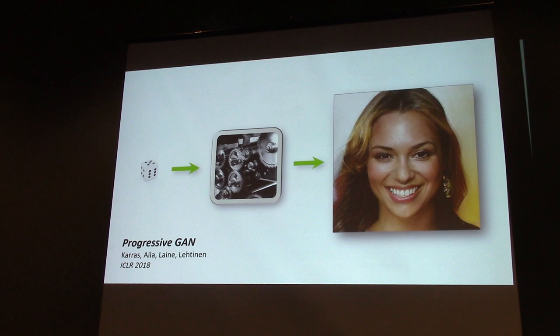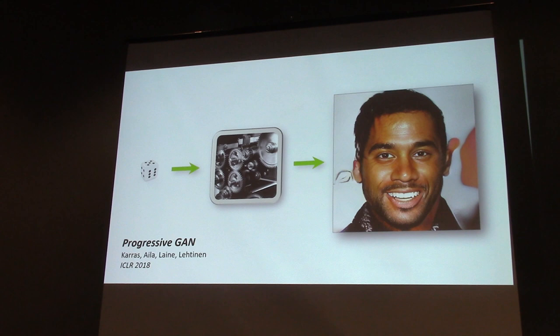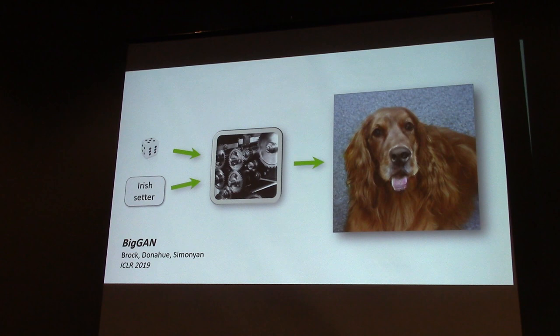While the results look quite nice, there is one problem: the generation process is quite difficult to control. For example, if we want to modify some particular attributes of the image, like gender or hair length, there is no reliable way to do that. One way around this issue is to condition the generator with additional input data — for example, we can associate a class label with each training image, and then at runtime specify the desired class in addition to the latent code to get an image of that class.